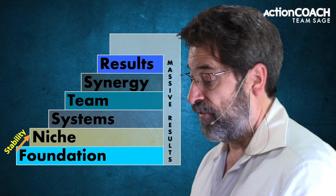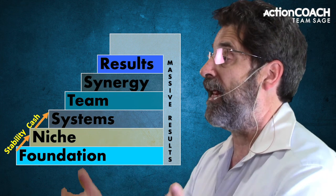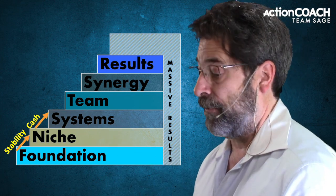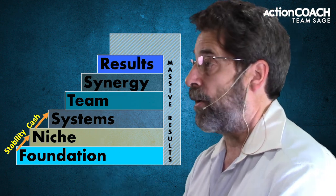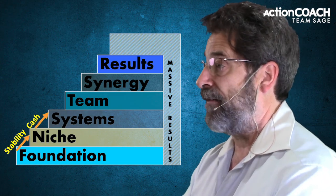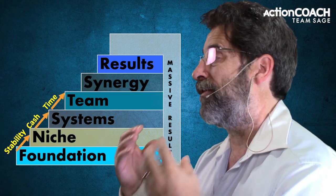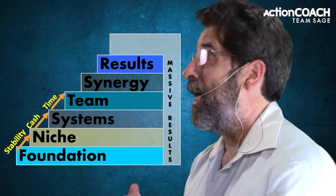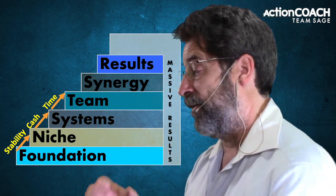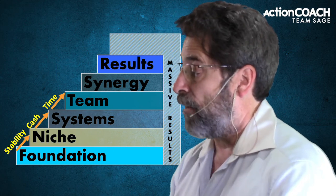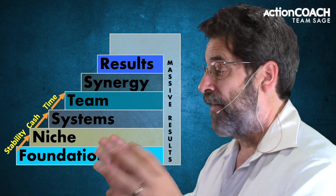Step three is when we bring in systems and make sure we have plenty of leverage in the business. In the first step we built the foundation; in the second step we brought in marketing and cash for stability; in the third step we bring in leverage for efficiency and time. The fourth step is team — making sure our team can run the business as well as we can, which brings in the structure for growth.